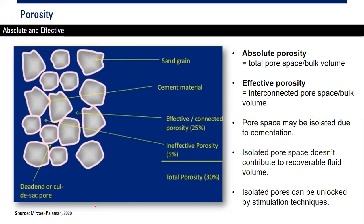We can divide porosity into absolute and effective porosity. Starting from the left picture, this is the sand grain or rock grain. At the surface of each rock grain is the cement material, and here we have the void space which we call the porosity or the pores. If the pores are connected, we call it effective or connected porosity — fluid can pass through them. Some porosity is ineffective because the pores are isolated and not connected with other spaces.